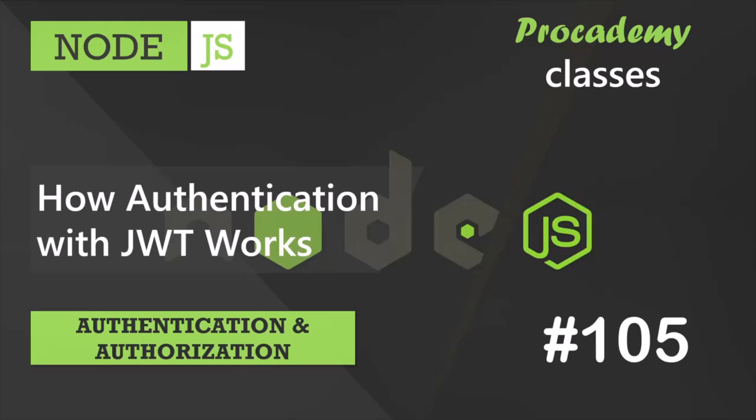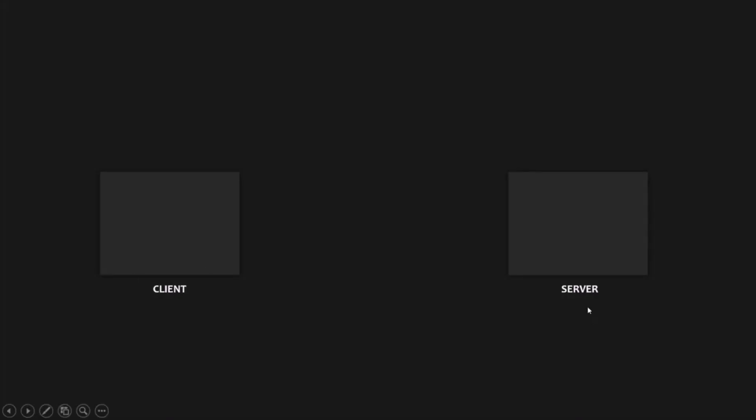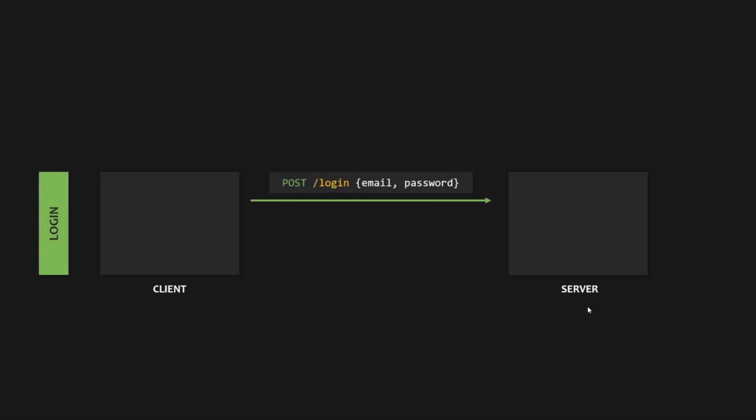Let's now take a look at how authentication works with JSON Web Token. We have a client and a server. Assuming that we already have some users in the database, let's see how a user is authenticated when he tries to log into an app. The user's client starts by making a POST request to the server with a username or email and the password.